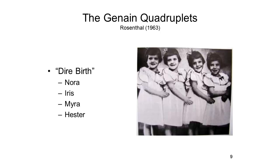Each of the Janain Quadruplets suffers from schizophrenia. The fact that they had parents who were mentally ill and they all suffered from the same mental illness is consistent with a strong genetic component to schizophrenia. But the specific features of their illnesses differed greatly. Nora, Iris, and Hester became so ill that they had to be hospitalized on at least one occasion, but Myra never became that seriously ill. David Rosenthal, who edited a book on the Janain Quadruplets, specifically proposed that the outcome in each of the four cases represented a unique interaction of diathesis and stress factors.